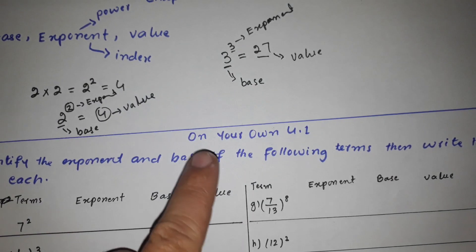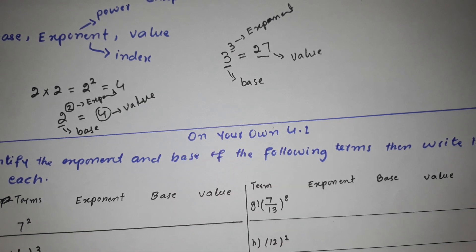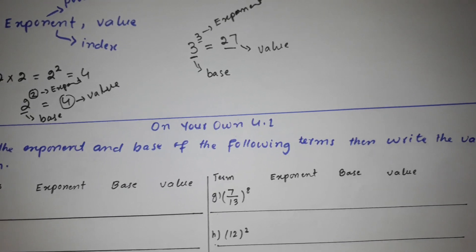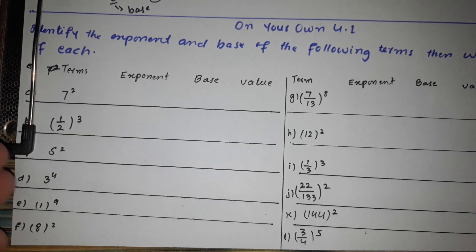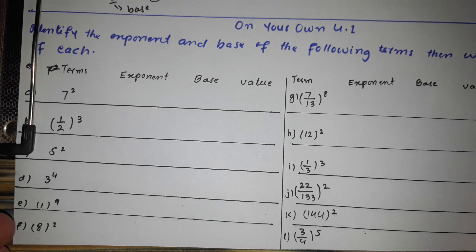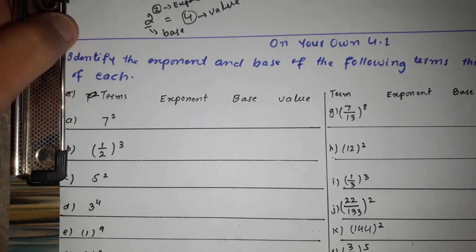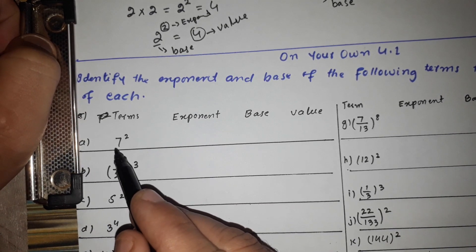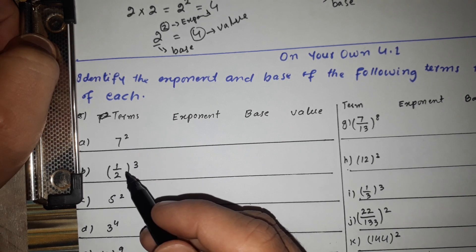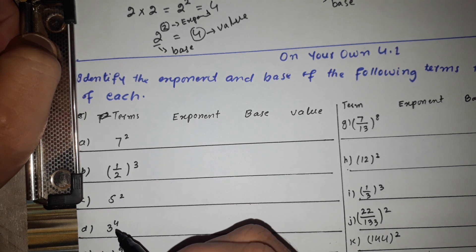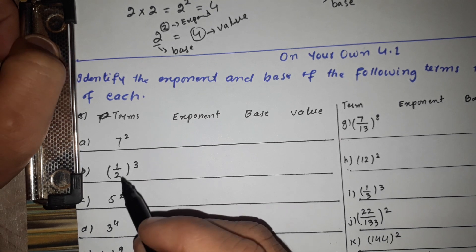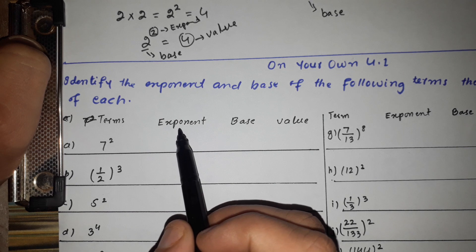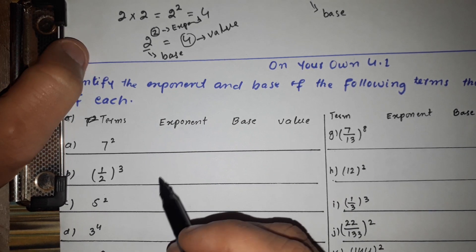Let's do Exercise 4.1. Identify the exponent and base of the following terms and then write the value of each. The terms are identified by their base and exponent, and then we find the value. Let's take Part A.